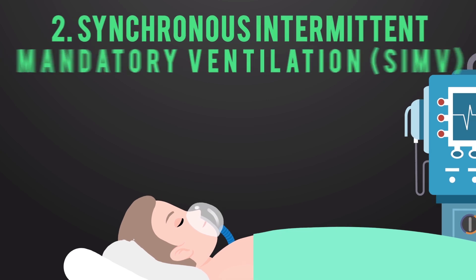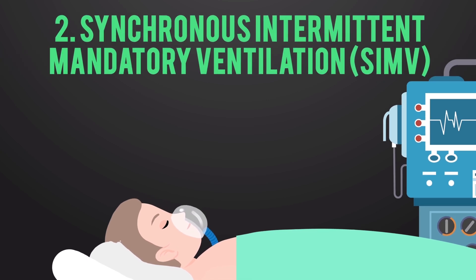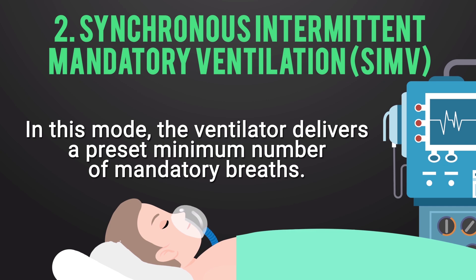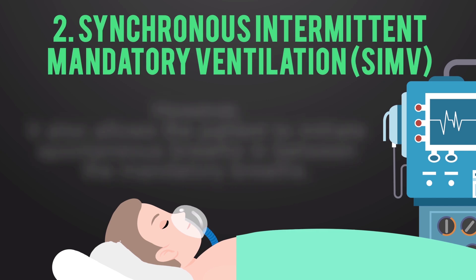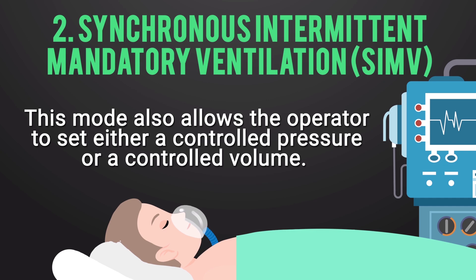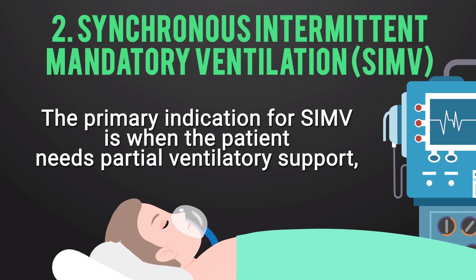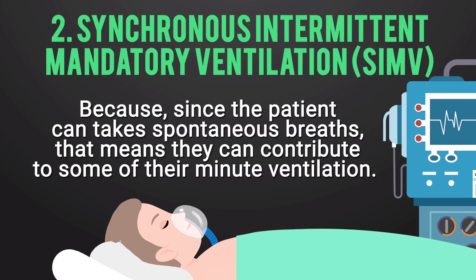The second primary mode is SIMV, or Synchronous Intermittent Mandatory Ventilation. In this mode, the ventilator delivers a preset minimum number of mandatory breaths, but it also allows the patient to initiate spontaneous breaths in between the mandatory breaths. This mode allows the operator — either the respiratory therapist or the doctor — to set either a controlled pressure or a controlled volume. The primary indication for SIMV is when the patient needs partial ventilatory support, since the patient can contribute to some of their minute ventilation.